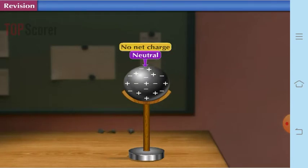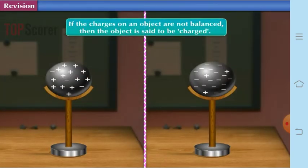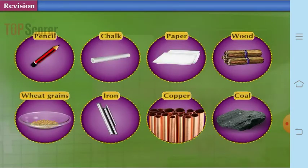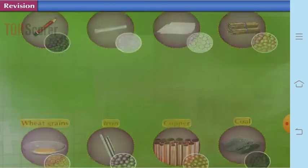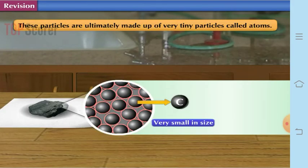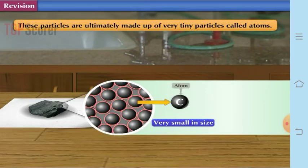No net charge is there when the electric charges are balanced. If the charges on an object are not balanced, then the object is said to be charged. That means there might be either more positive charges or more negative charges. All the objects are electrically neutral. All objects are made up of particles and these particles are again made up of very small sized or tiny particles called atoms.